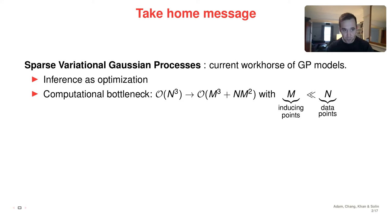Most importantly, sparsity changes computational bottlenecks that normally lead to computations that scale cubically with the number of data points to a lower complexity by introducing inducing points, m of them, m smaller than n, leading to a complexity that scales cubically with the number of inducing points and linearly with the number of data points.